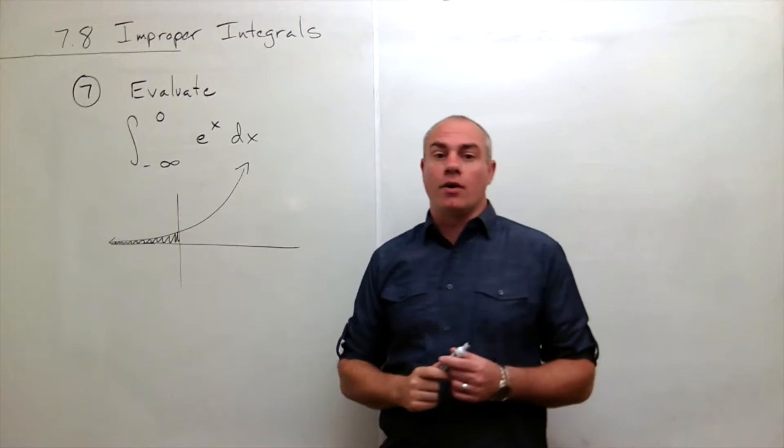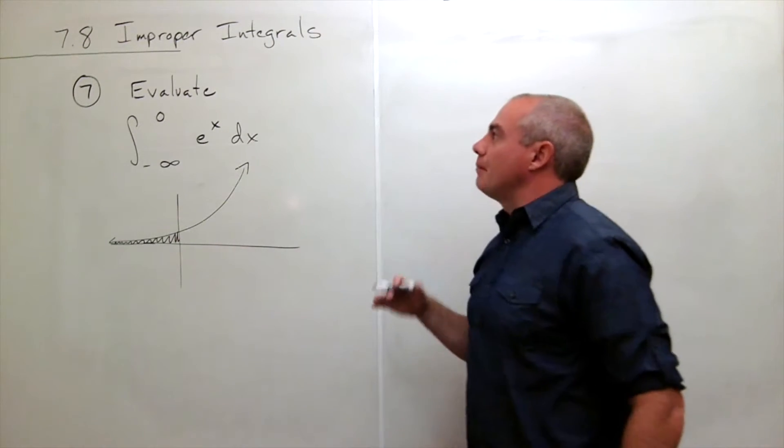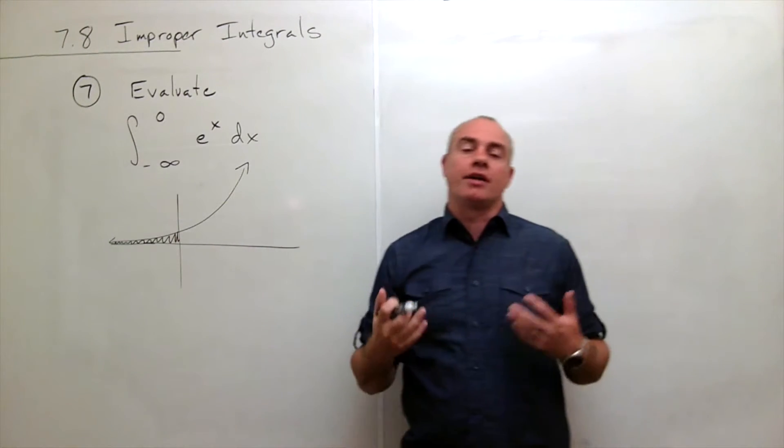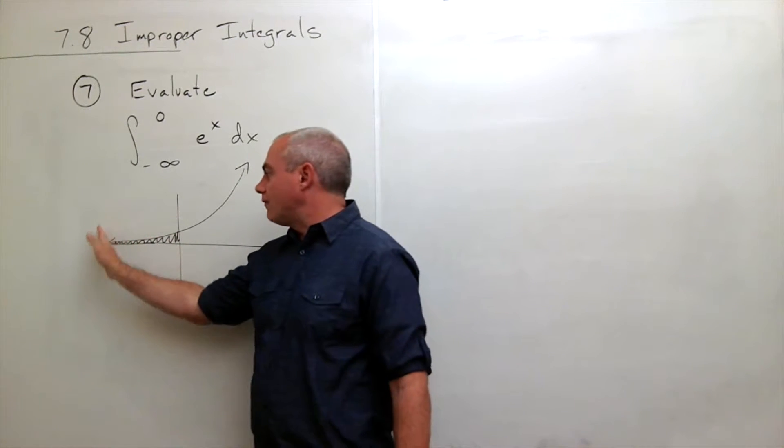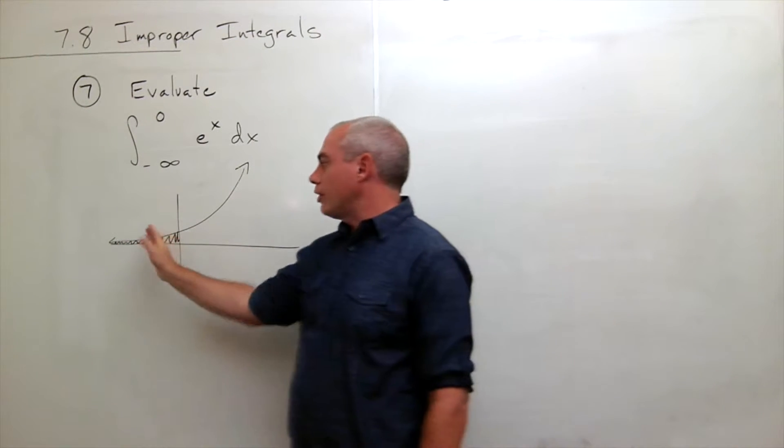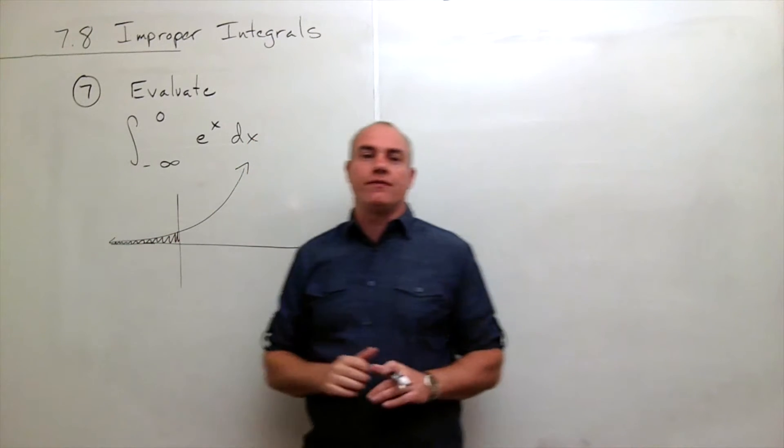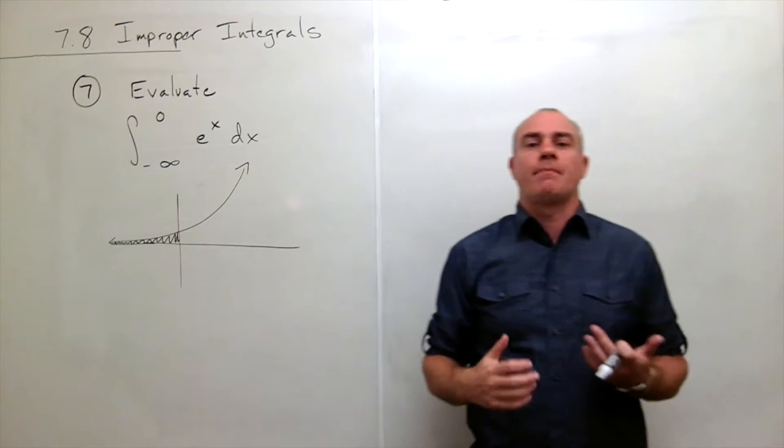Okay, so we have our integral set up, but this is an improper integral, and what that means is it's not going from a finite point to a finite point, we're integrating all the way out to infinity. So we have to set this thing up as a limit.